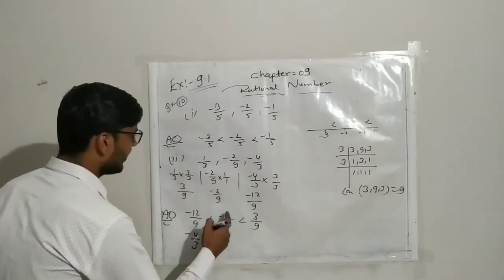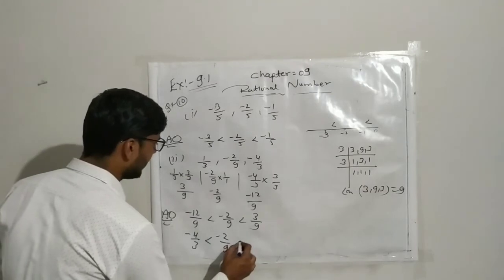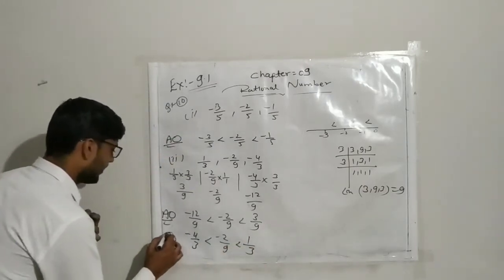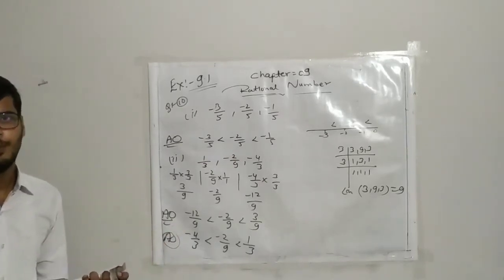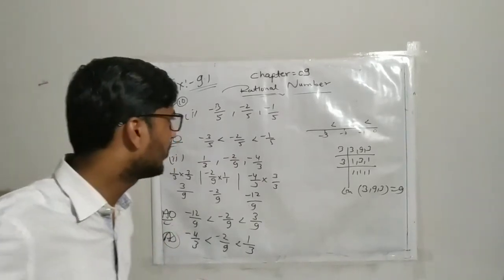It is less than minus 2 upon 9, and this is less than 1 upon 3. So this is the ascending order of these three numbers, meaning minimum to maximum. Now third question.